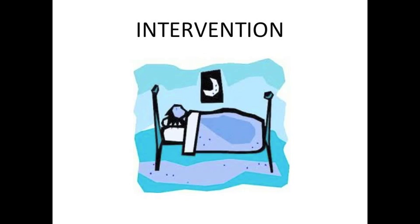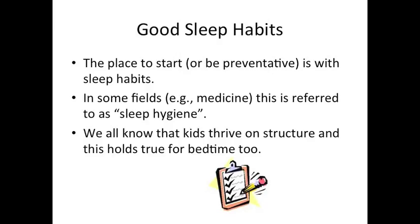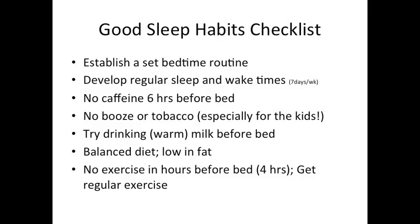So interventions. The first thing to set the stage for intervention is what the medical community calls sleep hygiene — we would just call it a pre-bedtime routine. Having a routine is the starting place. We know kids thrive in structure, so let's give them structure and predictability. There's that characteristic of autism — I like the predictability. Let's make bedtime a predictable routine. Some families have no problem with this; others need some help. So have a set bedtime routine, develop sleep and wake times.